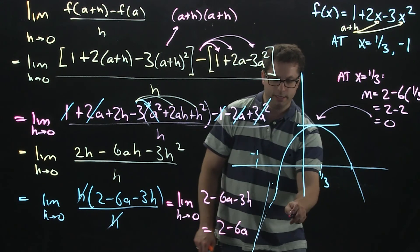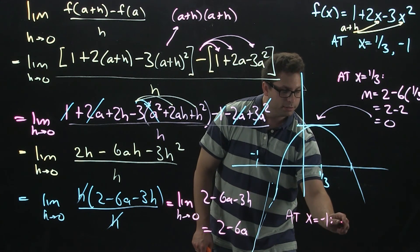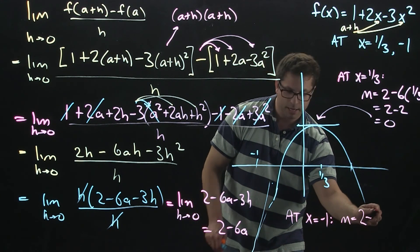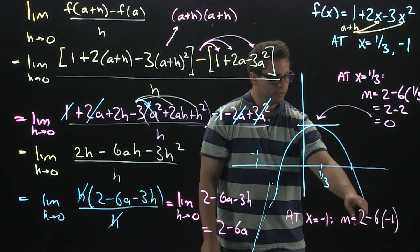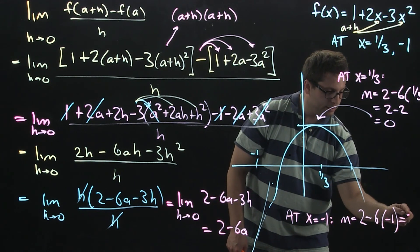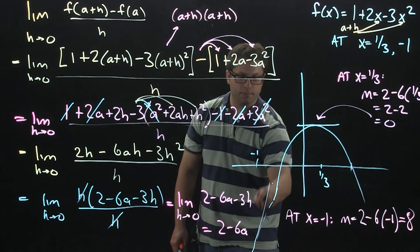Then, down here at negative 1, the slope is going to be 2 minus 6 times negative 1. So, that's 2 plus 6. That's 8. Which makes sense because that looks like a pretty steep slope.